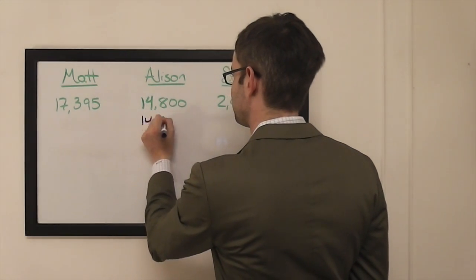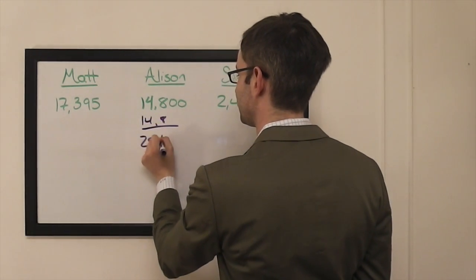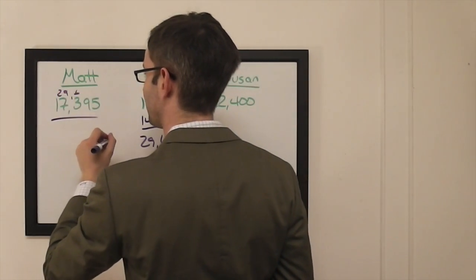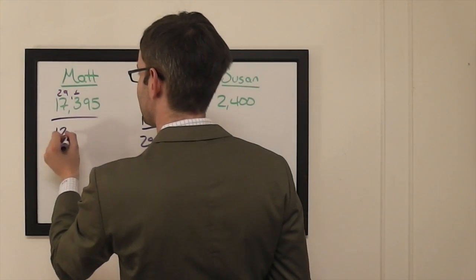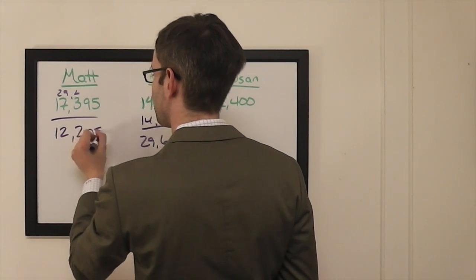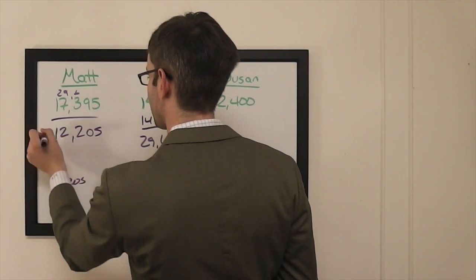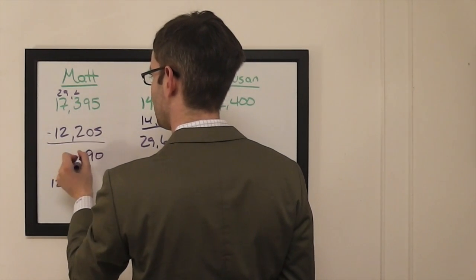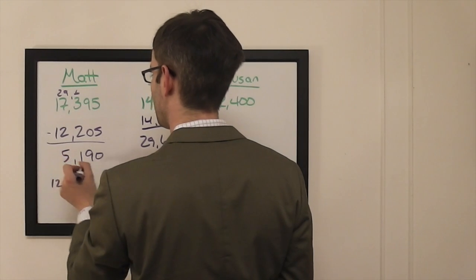Allison and Matt, Allison doubles up. $29,600 to cover that. This is such a foreign feeling to me right now, actually. $12,205. If he's wrong with that wager, he's going to be left with $5,190.